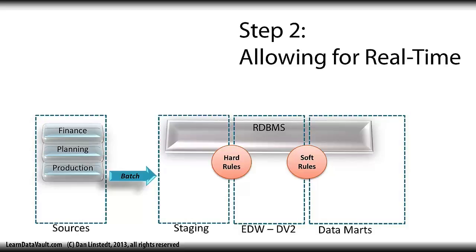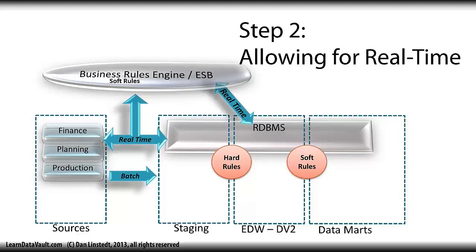Step two: allow for real time. We've got to be able to get real-time data into this environment. In this case that means introducing either a business rules engine, an ESB — enterprise service bus — or SOA, the service-oriented architecture. Because we have moved the soft rules downstream from the data warehouse middle tier, we can now process raw data coming in at real time whenever it's ready, store it in a historical format inside the data warehouse, and then do what's called delayed processing by moving those soft rules into the data mart or information mart layer downstream.